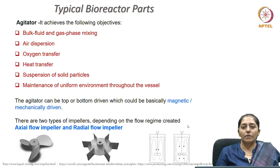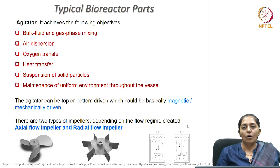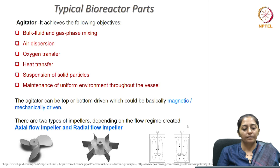The agitator achieves bulk liquid and gas mixing, provides dispersion of air, and facilitates oxygen transfer from the gas bubble to the liquid broth. It also facilitates heat transfer throughout the liquid broth and from the broth to the external coolant circulating to maintain reactor temperature. It helps in suspension of cells or solid particles inside the reactor during cultivation, preventing settling, and maintains a uniform environment throughout the vessel — all playing a crucial role in bioprocess efficiency.